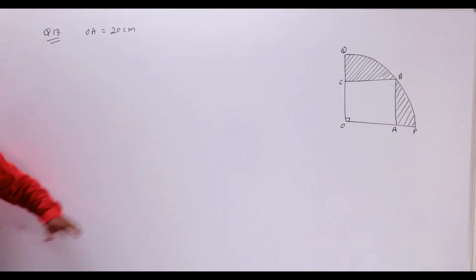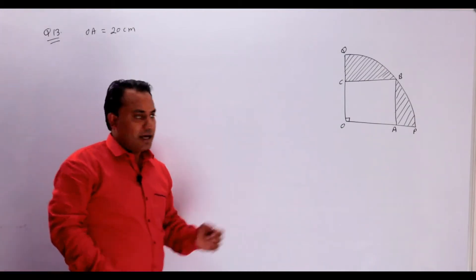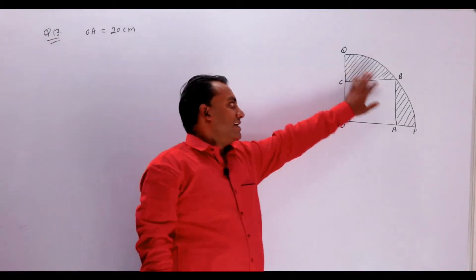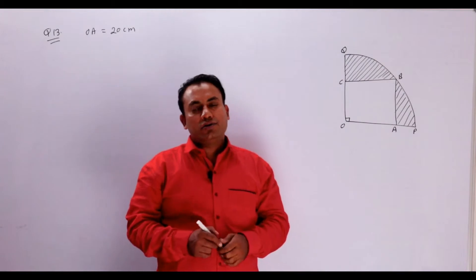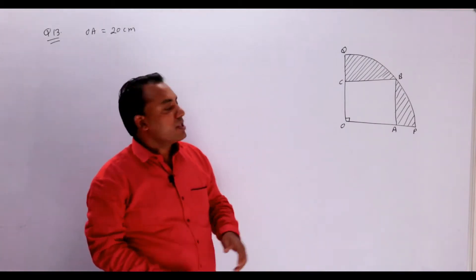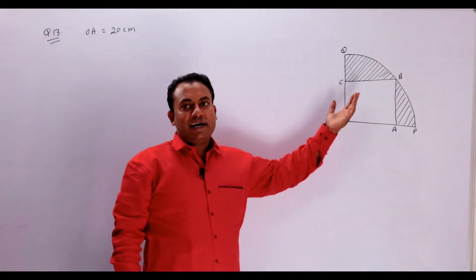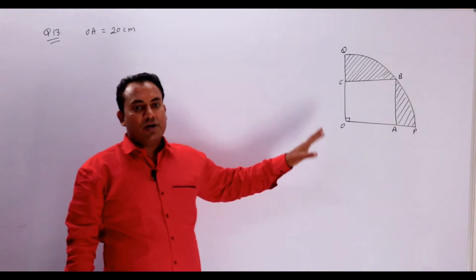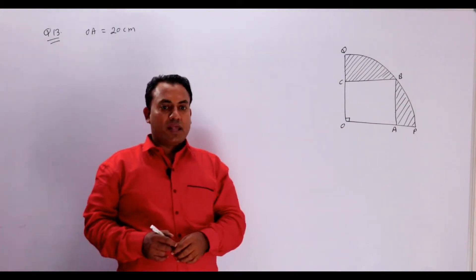Bacchon, question mein figure bhi aisi bani hui hai, aapne dekh liya hoga apni book mein. Yahan bhi dekh sakte hain aap. Aapko shaded region ka area nikalna hai. Wo tab milega jab aap area of quadrant mein se area of square minus kar lenge.